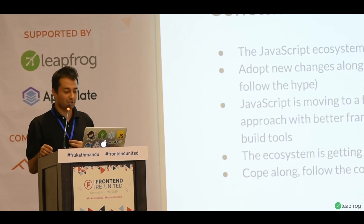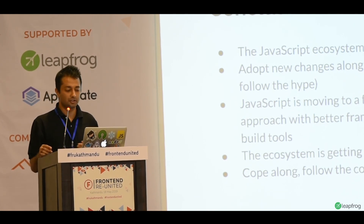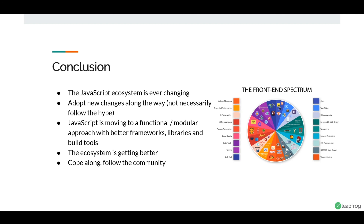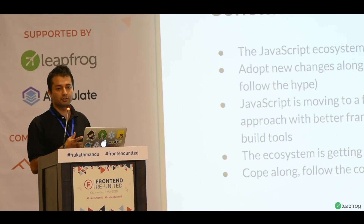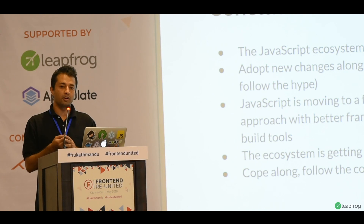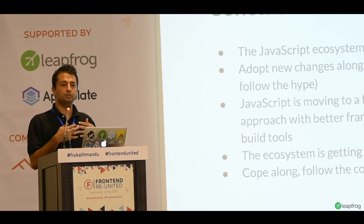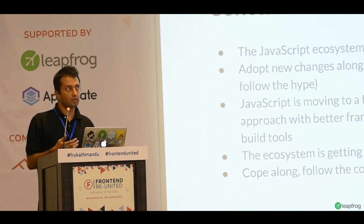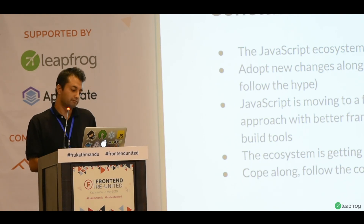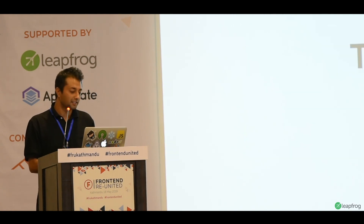In conclusion: the JavaScript ecosystem is changing, and adapting to new changes is a must. We should always go forward. JavaScript is moving toward functional and modular approaches and getting more capable. Even HTML is getting more capable — there used to be Flash and Java applets in the browser; now it can all be done with HTML5. The ecosystem is getting better for developers. We should follow and move forward. Thank you.